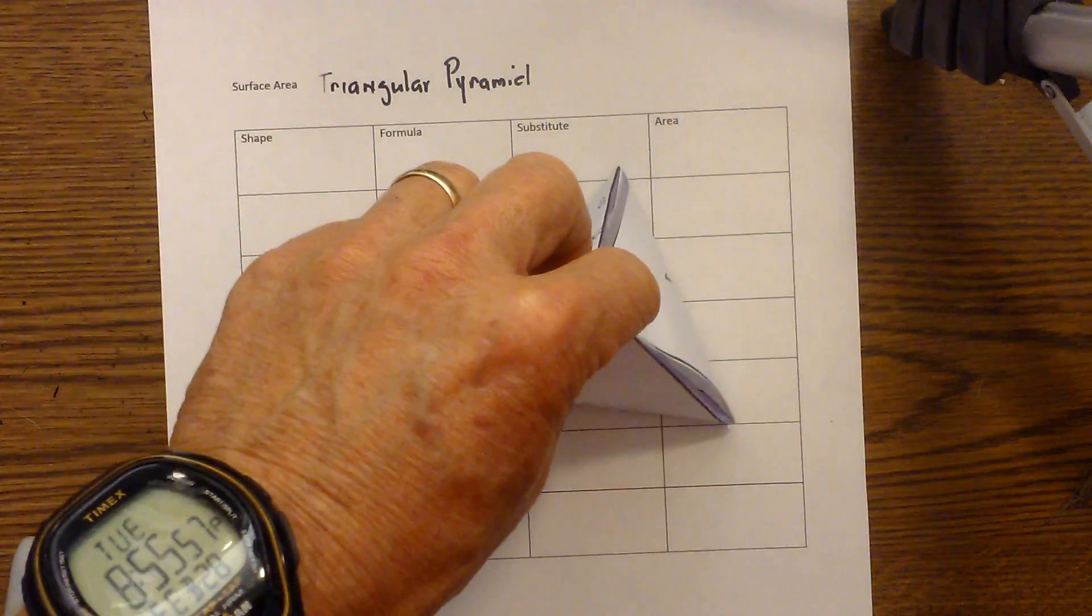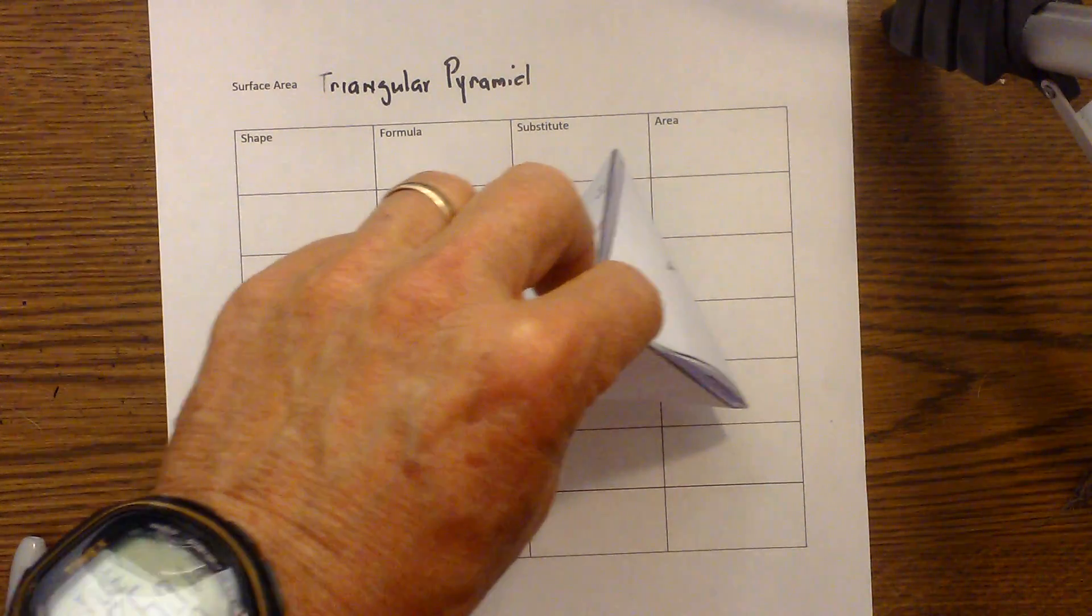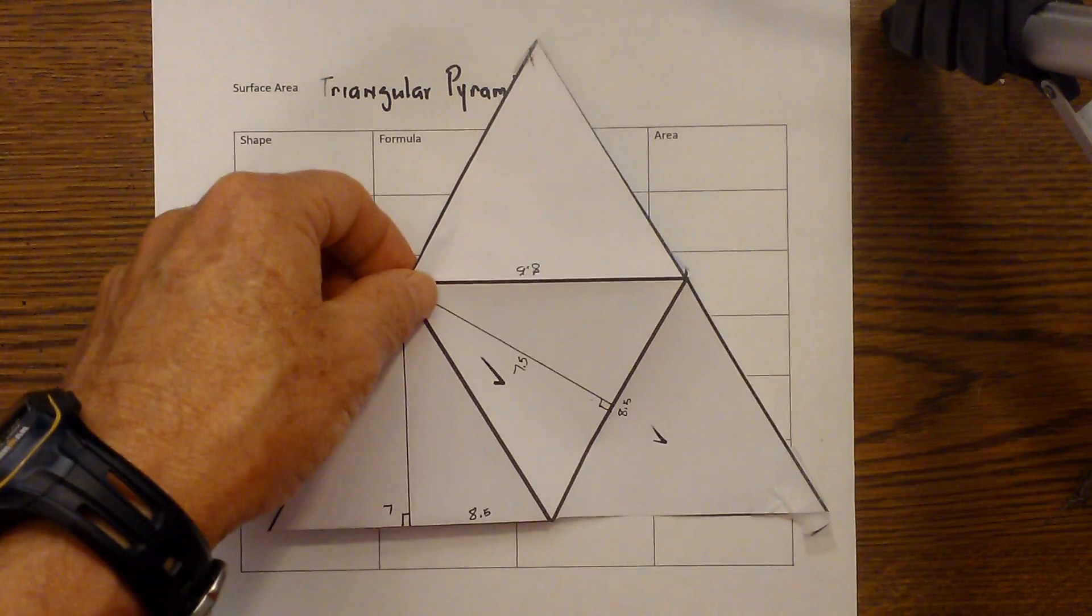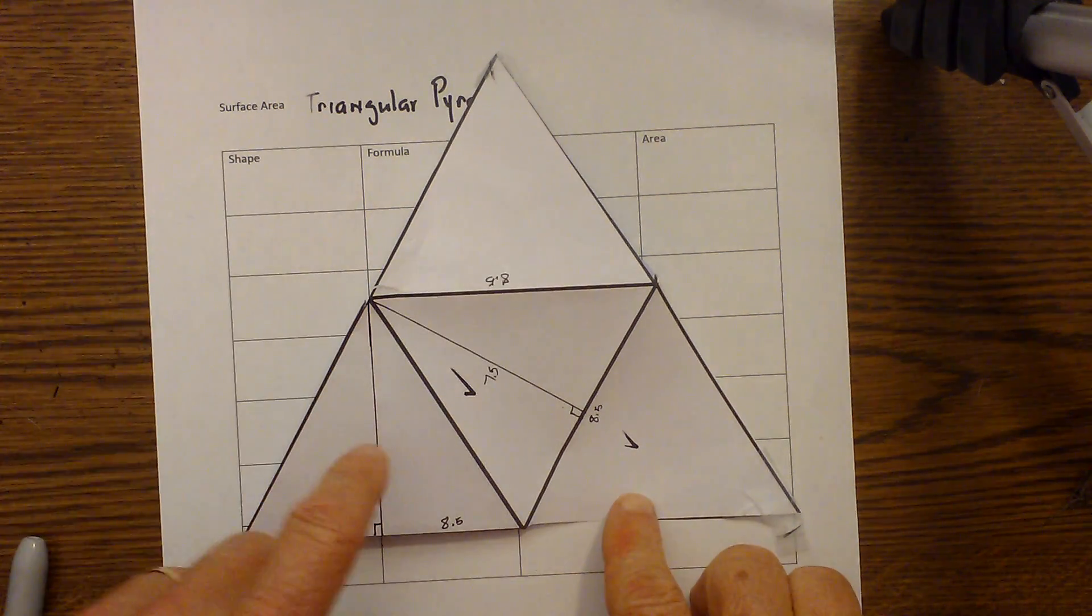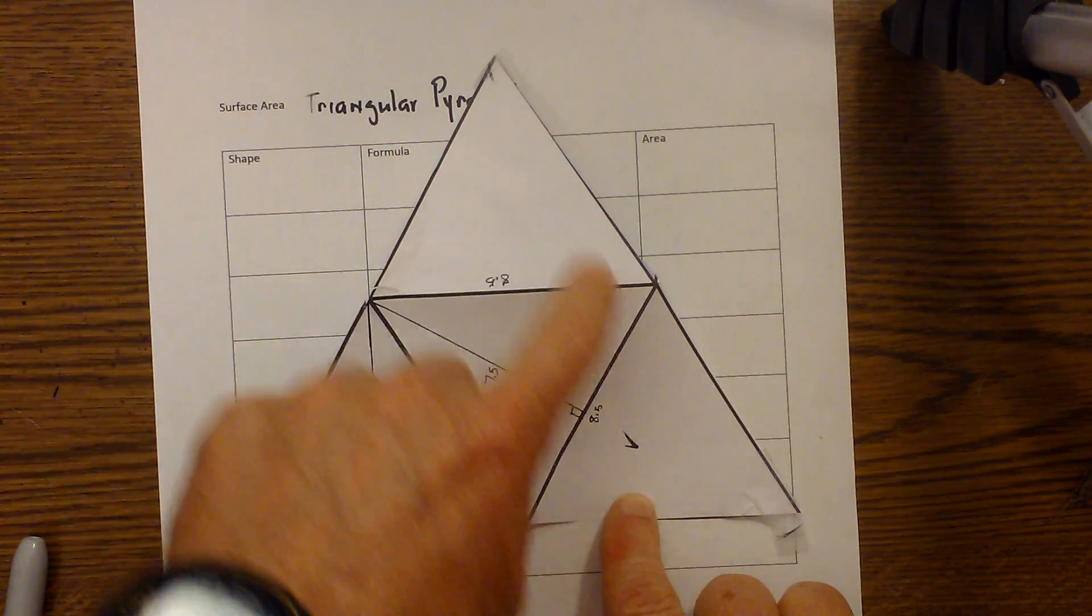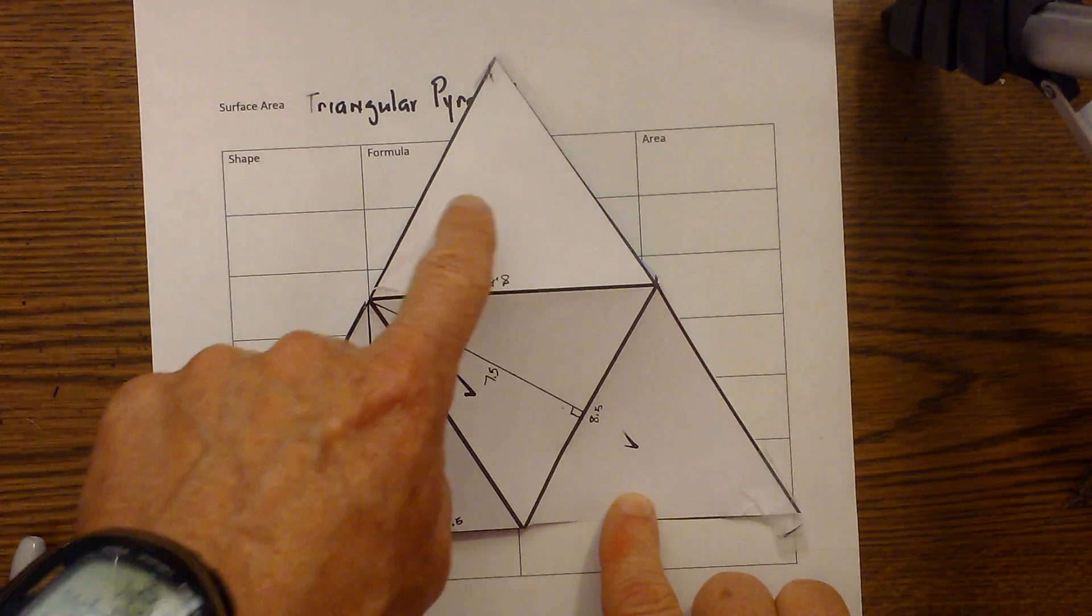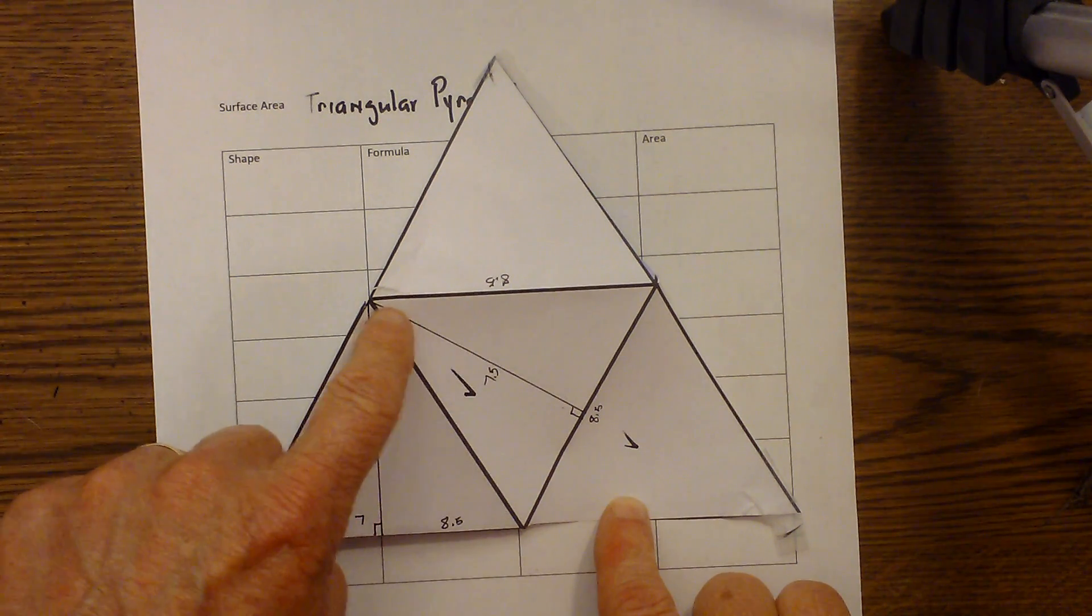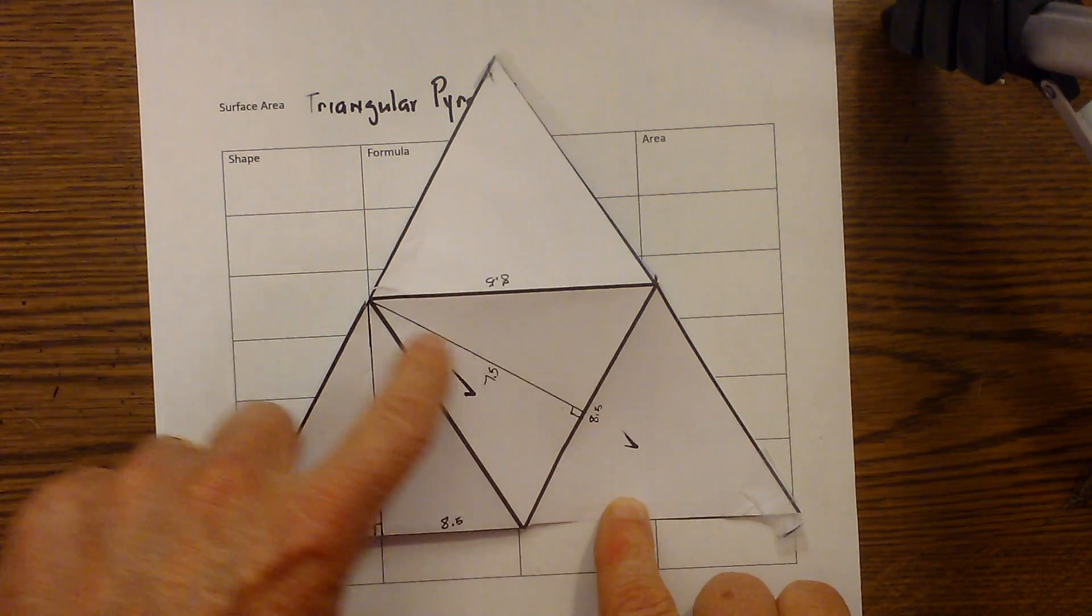And then I have a net here that I will unfold for you so that you can see each side. You can see that this particular triangular pyramid is constructed of four triangles. The three around the perimeter will be the very same size, but this triangle in the middle is slightly larger—it has a slightly taller height.